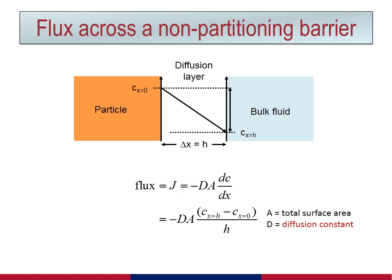The constant of proportionality is described as a product of two terms. The first, D, or the diffusion constant, is a characteristic of the drug that makes up the solid particle. The second factor, A, is the total surface area of the solid particles.